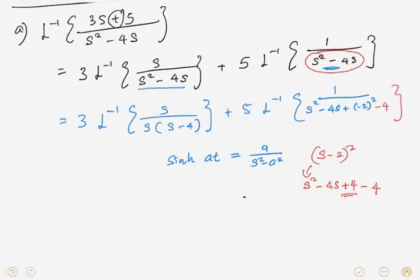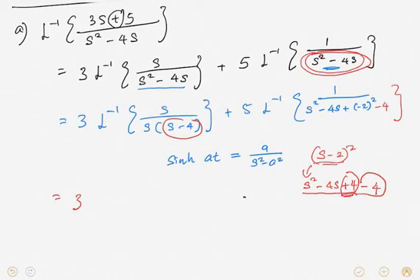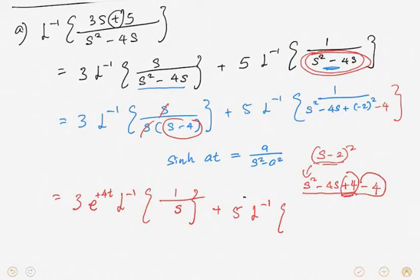So s² - 4s = (s - 2)² - 4. This is the shifting part. We now change the expression: we get 3·e^(4t) times the inverse Laplace transform. The s in numerator and denominator cancel, leaving 1 over (s - 2)² - 4. Plus 5 times the inverse Laplace transform of 1 over (s - 2)² - 4. So we have 3·e^(4t) times the inverse of 1 over (s - 2)² - 4, plus 5 times the inverse of 1 over (s - 2)² - 4.